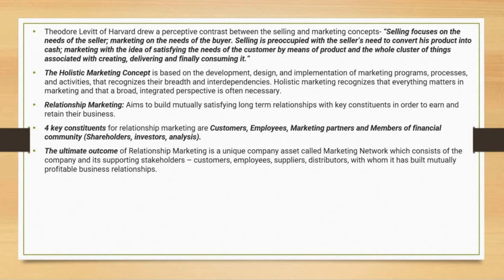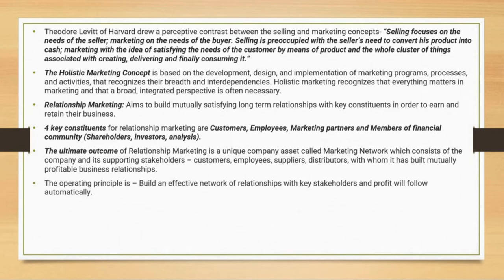Stakeholders include customers, employees, suppliers and distributors with whom the company has built mutually profitable business relationships. The operating principle is: build an effective network of relationships with key stakeholders and profit will follow automatically. Relationship marketing means building an effective network with your key stakeholders, and when you do this, the profit will ultimately follow.